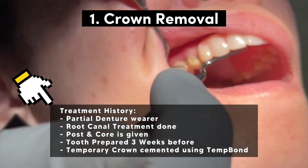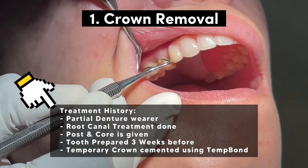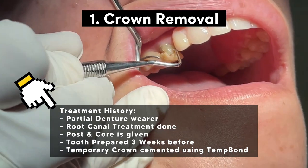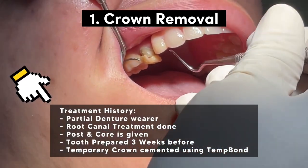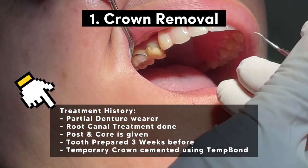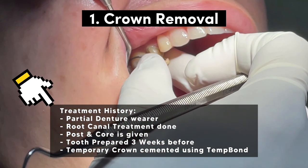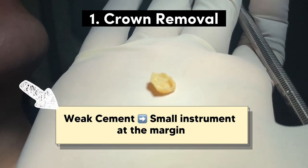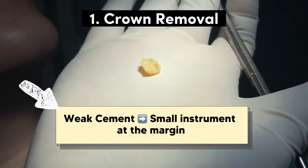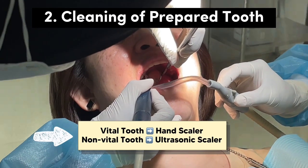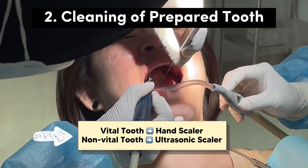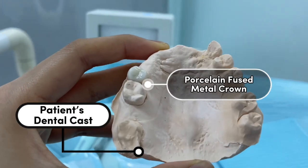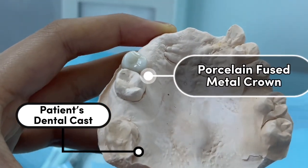We are removing the temporary crown which was cemented using Tempbond — that is a temporary cement. There are many crown removal systems; you can use any small instrument at the margin to remove it. Once the temporary crown is removed, we proceed to cleaning of that particular tooth. You can use a scaler to remove debris of cement as well as food debris. Since it is non-vital, we have used the ultrasonic scaler.